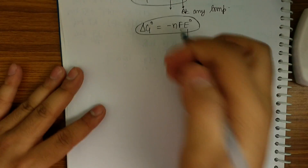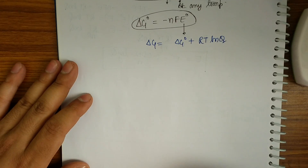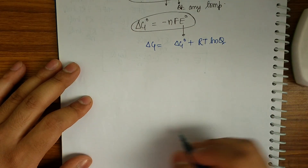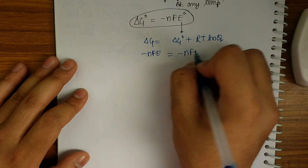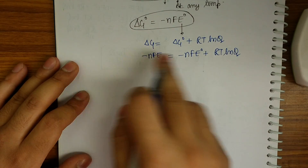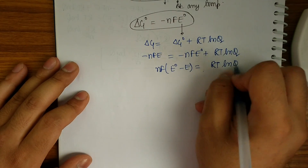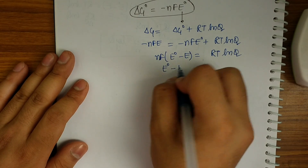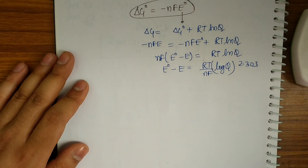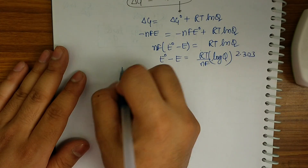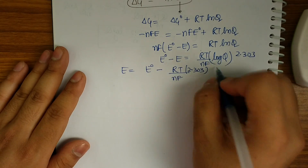In thermodynamics, we must have studied that ΔG is equal to ΔG0 plus RT ln Q, where Q is the reaction quotient. At equilibrium, it becomes the equilibrium constant. Substituting ΔG = -NFE and ΔG0 = -NFE0, we get: -NFE = -NFE0 + RT ln Q. Rearranging, E0 minus E equals RT/NF times 2.303 log Q, to convert natural log to base-10 log.